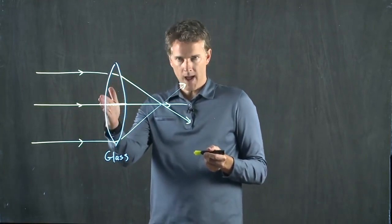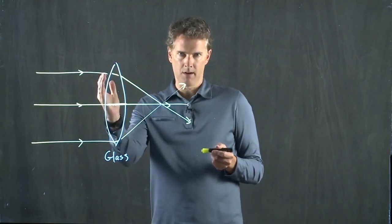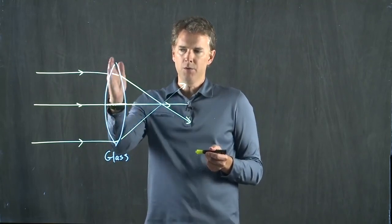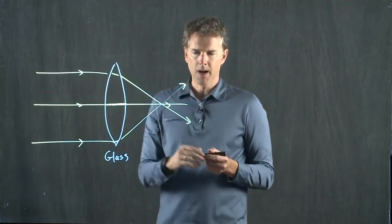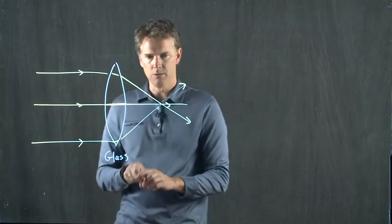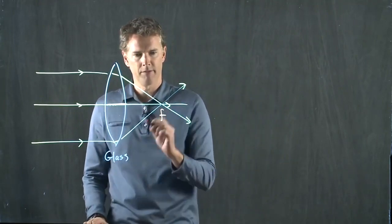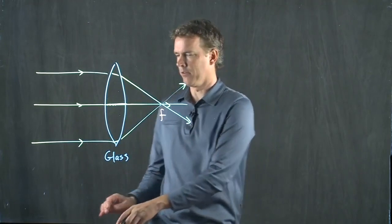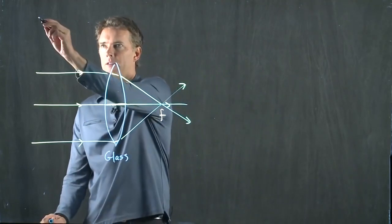Each ray obeys Snell's law. If you design this glass just right, you can get all those rays to come to the focus, F. And this of course becomes a thin lens.